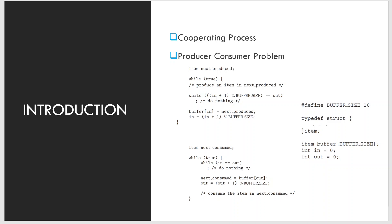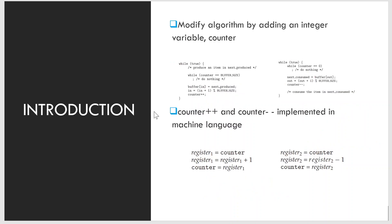Suppose we want to modify the algorithm to remedy this deficiency. One possibility is to add an integer variable counter initialized to zero. Counter is incremented every time we add a new item to the buffer and decremented every time we remove an item. The producer code adds counter++, keeping a check on whether the counter value reaches buffer size. In the consumer process, counter-- is added.